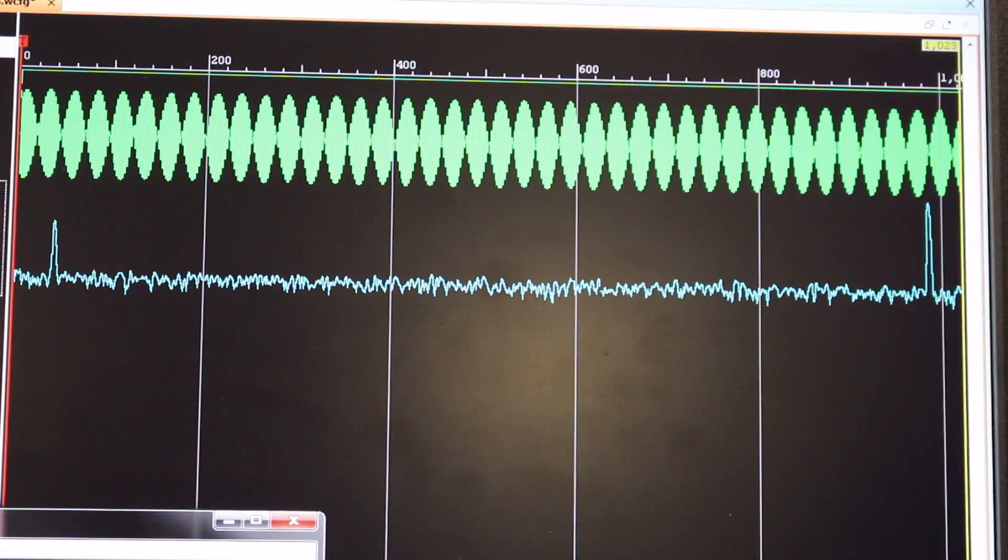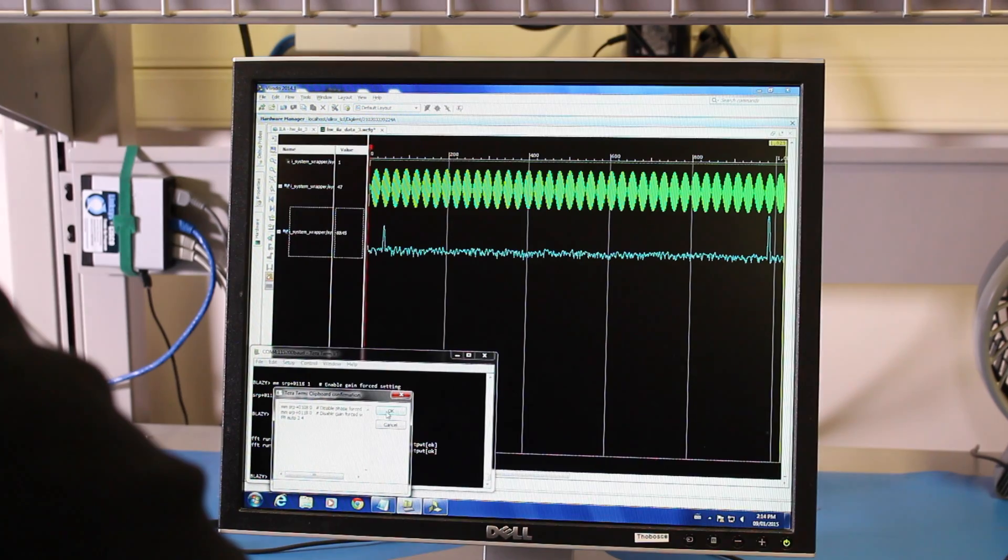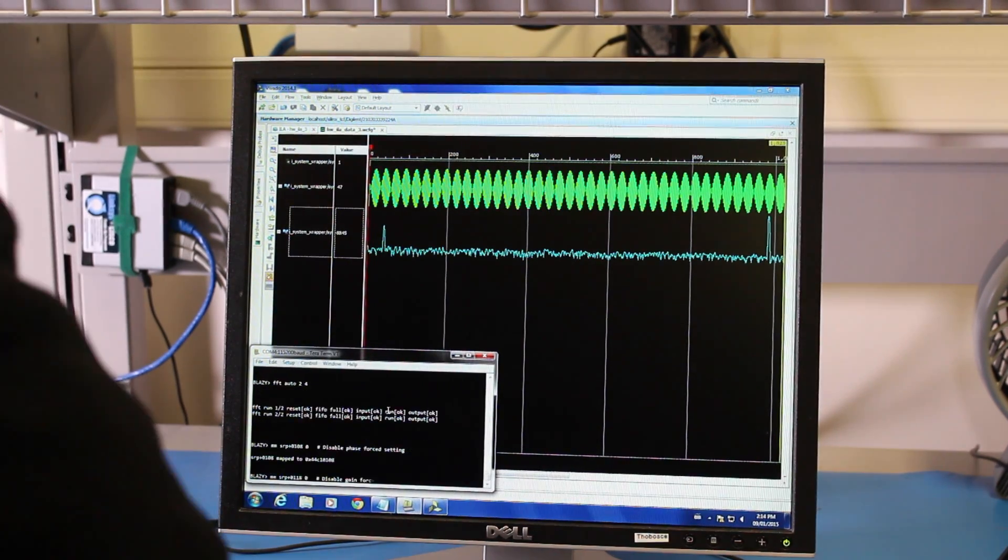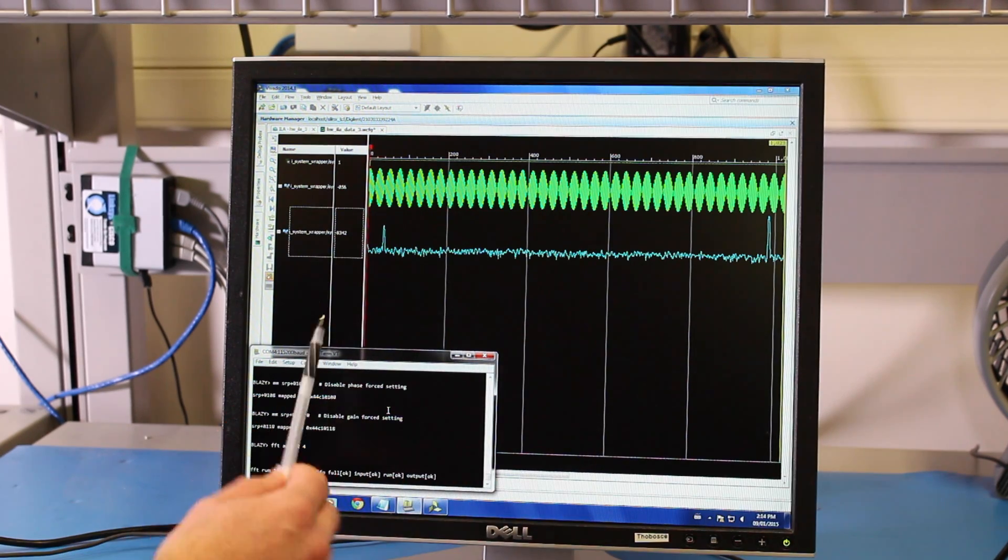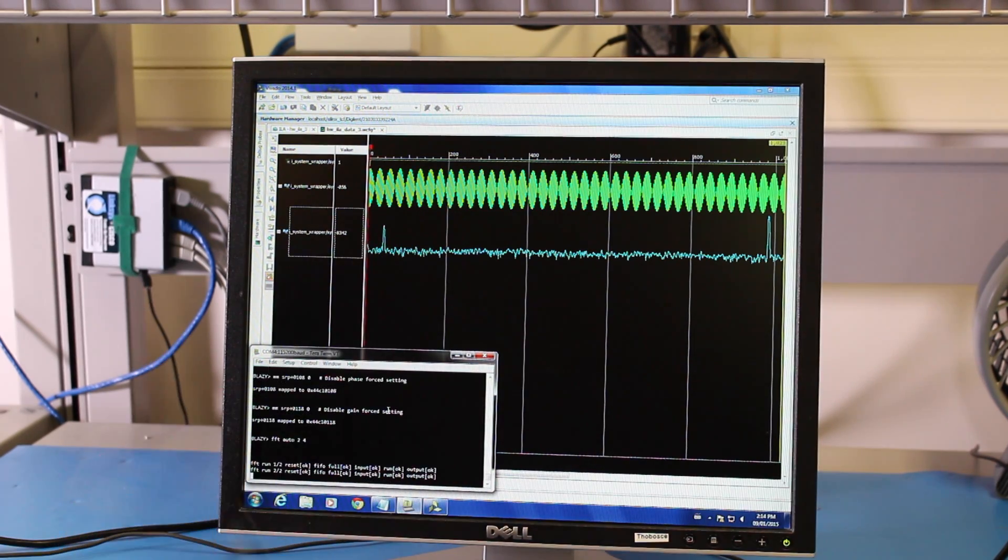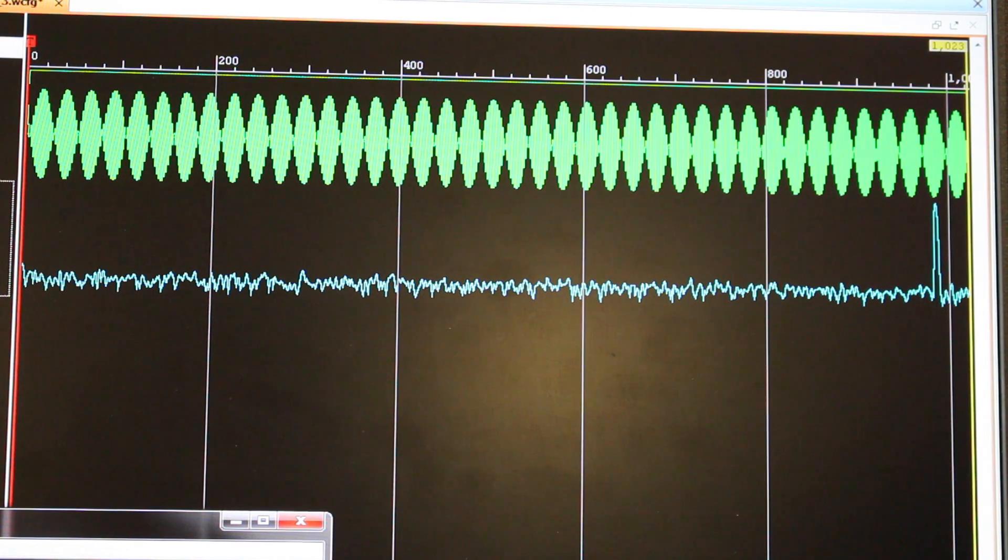So I'm going to turn on the interleaving correction. Once a capture is completed, you see the spur disappear. The interleaving has been corrected.